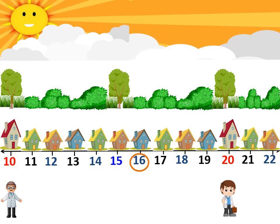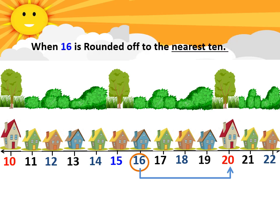Let's continue with our story. A member of house number 16 needs to visit the doctor. Which doctor will he choose? Yes, he will contact Dr. Sam at house 20, as he is the nearest available doctor. Relating it again with rounding off: 16 is rounded off to the nearest 10, which in this case is 20.